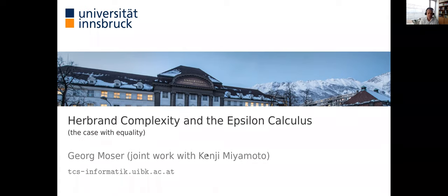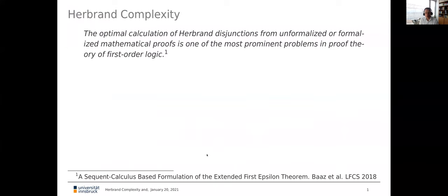That's joint work with Kenji. So let me try to explain the title by starting with the motivation, which I take from a recent paper by Matthias Baaz, Alex Leitsch, and Anela Lolic. They start the paper with the following claim: the optimal calculation of Herbrand disjunction from unformalized or formalized mathematical proofs is one of the most prominent problems in proof theory and first-order logic.